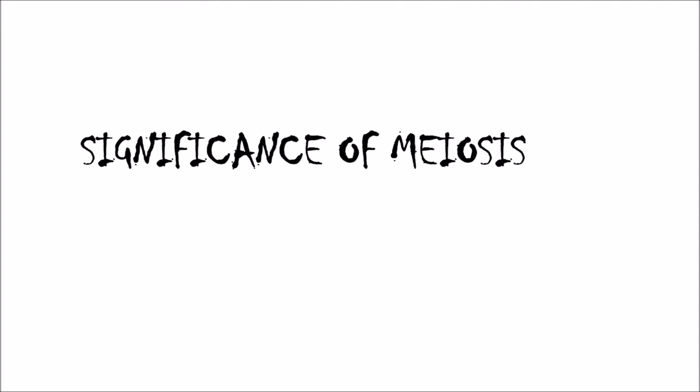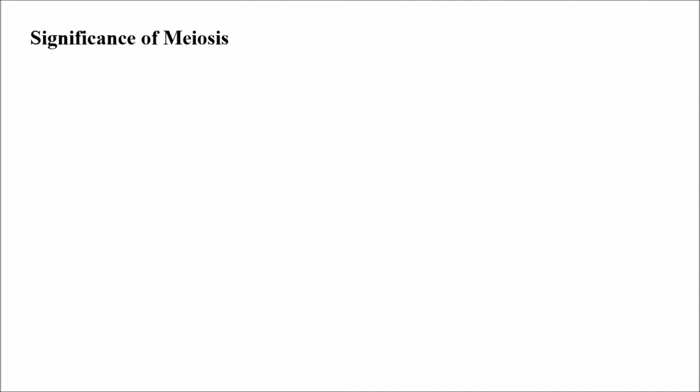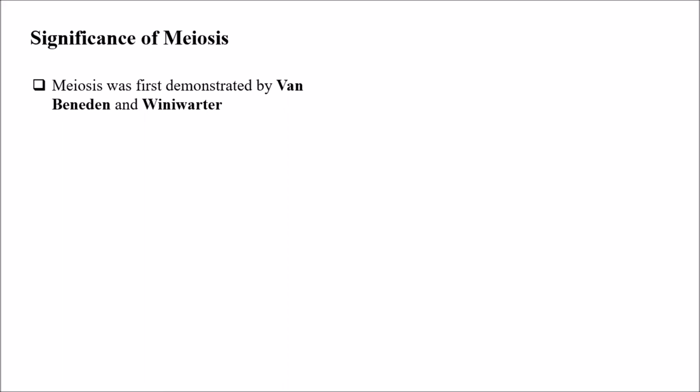So what is the significance of meiosis? Meiosis was demonstrated by van Beneden and Vinewater. In my previous videos I have given that meiosis was first termed by Farmer and Moore, and here I am telling about who demonstrated it for the first time — it was demonstrated by van Beneden and Vinewater.